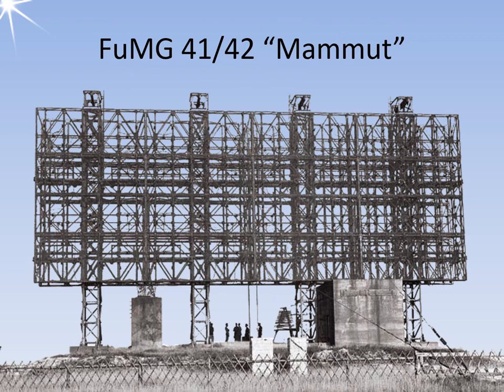The Mammut radar was developed in 1942 as an early warning radar system. It was the first 3D radar to use a phased array antenna, which was a fixed installation and measured 30 by 16 meters. The antenna weighed approximately 25 tons and utilized four complete Freya radar antennas side by side.